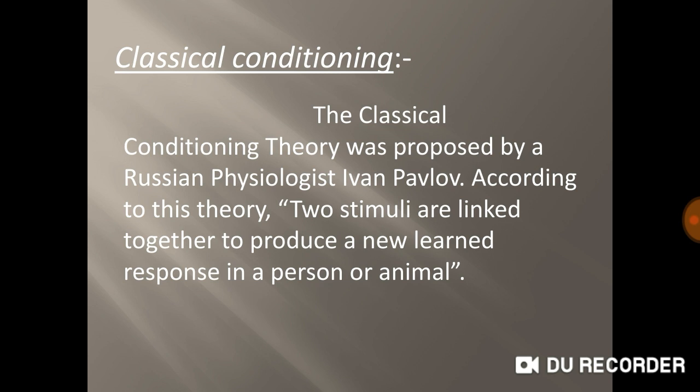Classical conditioning theory was proposed by Russian physiologist Ivan Pavlov. According to this theory, two stimuli are linked together in order to produce a new learned response in a person or animal. For example, if we think about our favorite food, our mouth becomes watery. The name of the favorite food is the stimulus, and the watering of our mouth is the response.